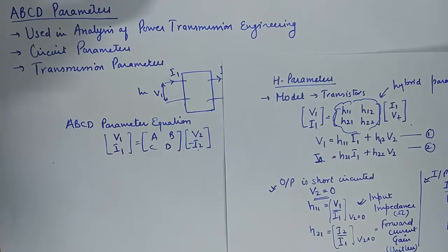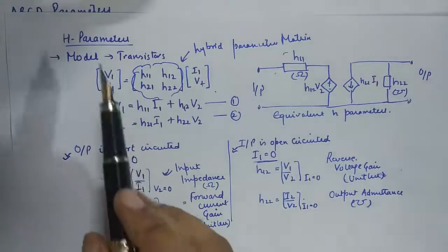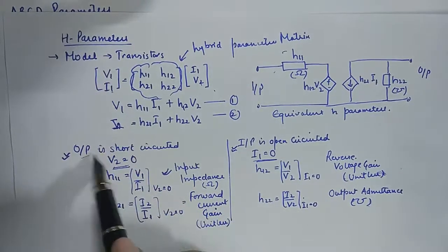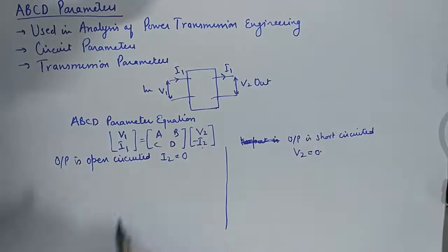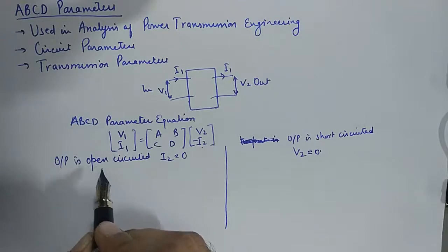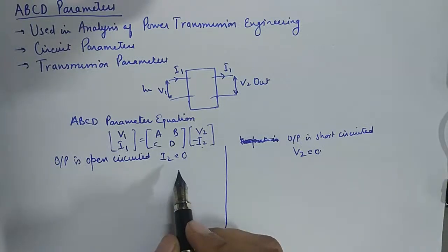This is something that you need to commit to memory. The conditions for finding h parameters is: output is short-circuited, input is open-circuited. So the conditions are: first condition is output is open-circuited, and second condition is output is short-circuited. When output is open-circuited, I2 is zero.